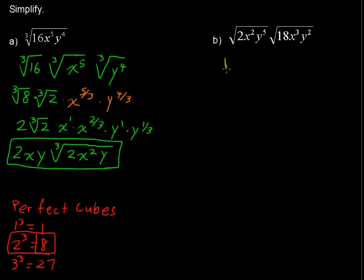And just get the square root of 36x to the fifth. Because multiplying like bases you add the exponents. y to the seventh. Square root of all of that.